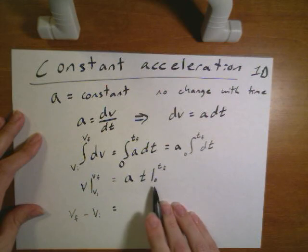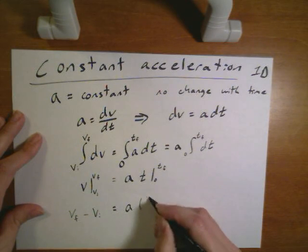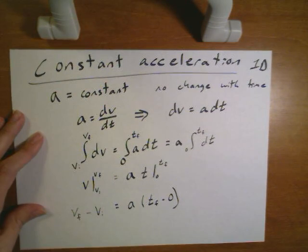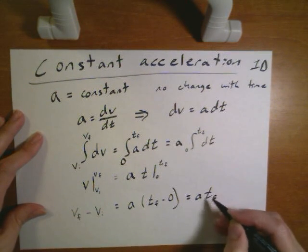Now when I'm integrating it from 0 to t final that's going to give me a times t final minus 0. Obviously t final minus 0 is just t final.